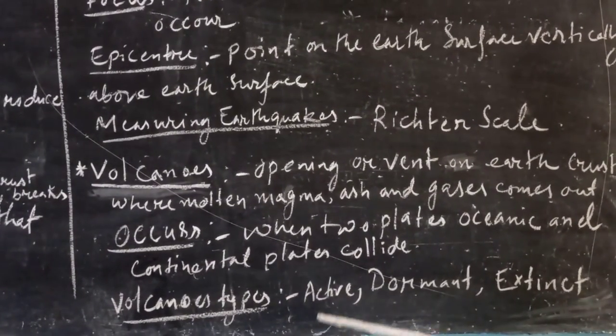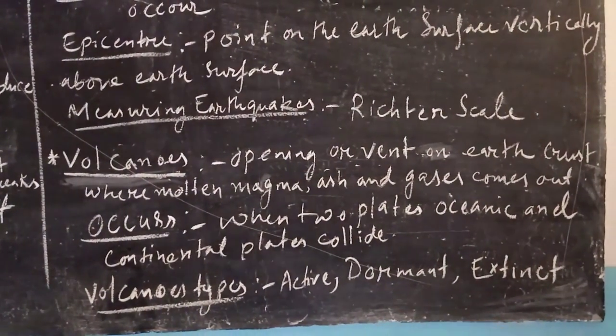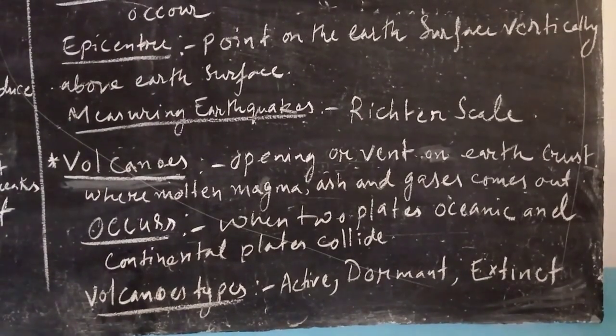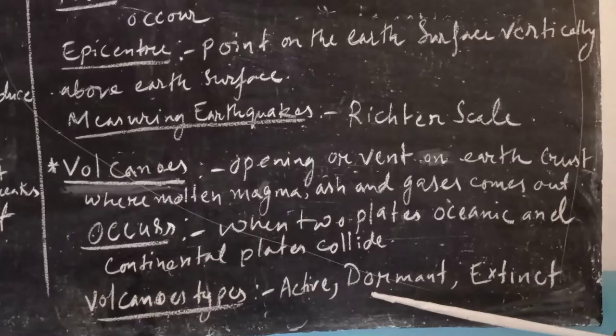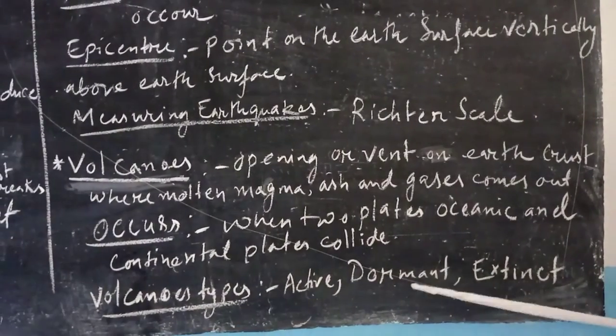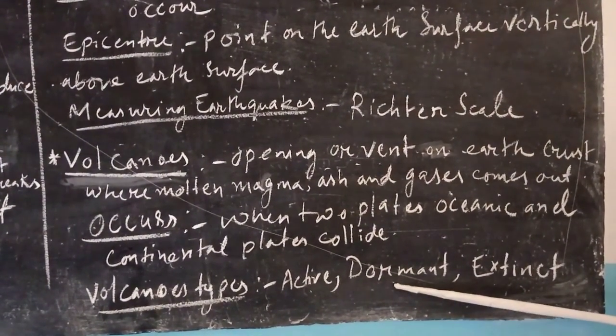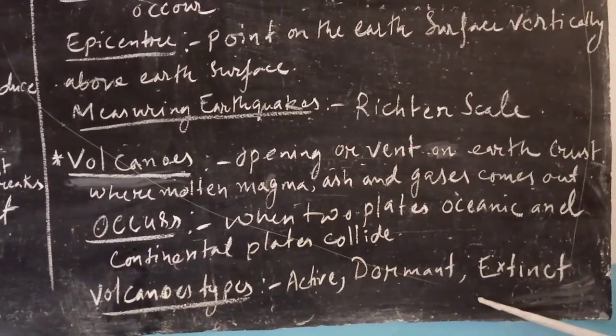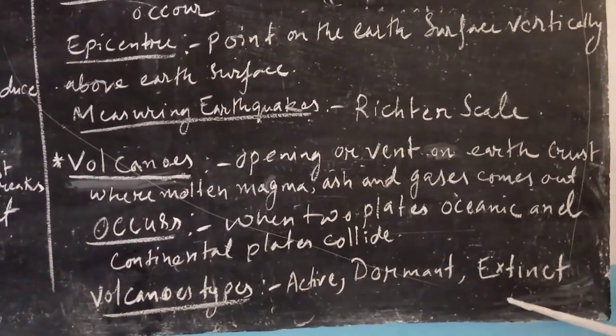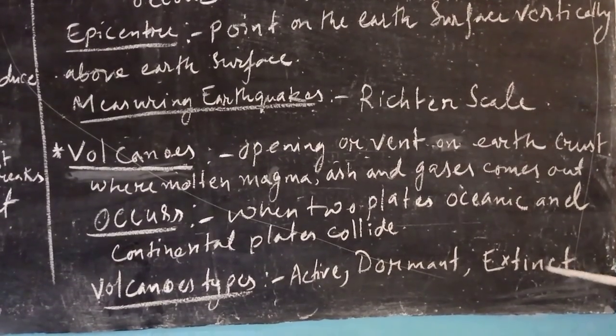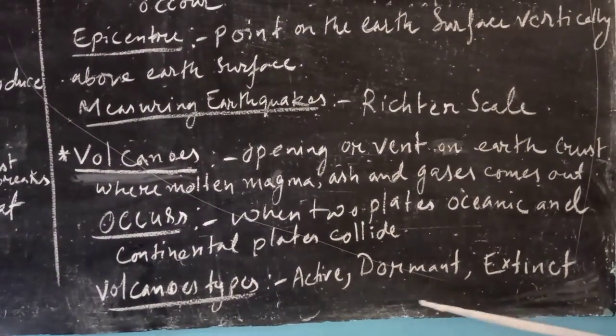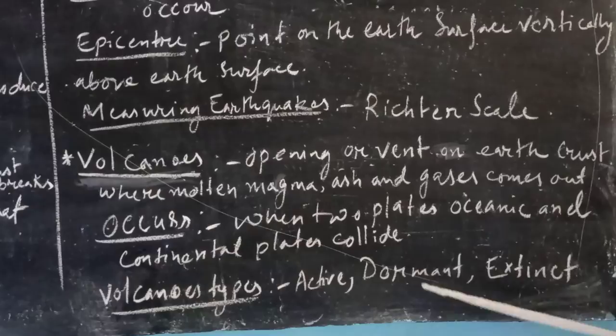Volcanoes are of three types: active, dormant, and extinct volcano. Active volcanoes may erupt frequently. Dormant volcanoes have not erupted but have a chance of erupting in the future. Extinct volcanoes have not erupted for more than 10,000 years and there is no chance of again erupting. These are the three types of volcanoes.